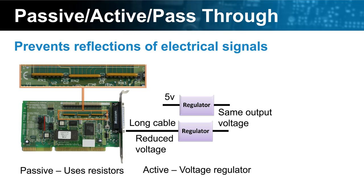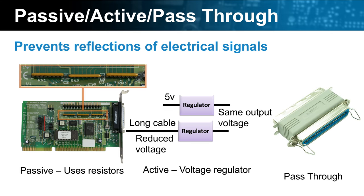The next type of terminator you may come across is a pass-through terminator. These terminators have a connector on each side and work like the other terminators. However, if you plug another device into the terminator, the terminator is effectively disabled. You will still need to have a terminator on the other end. In some cases, the next device may be a self-terminating device. Self-terminating devices do not require a terminator, as they will self-terminate if they are the last device on the chain.